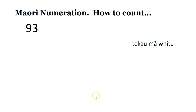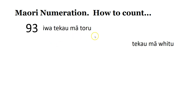Let's mix it up a little bit — not just multiples of ten, but numbers like ninety-three, twenty-two, twenty-five. So ninety-three — iwa te kau ma toru. What that means is iwa te kau, nine tens, ma meaning 'and' or 'add', toru, three. So ninety, add three.